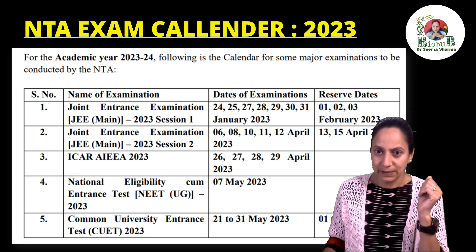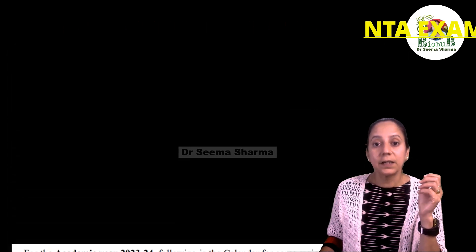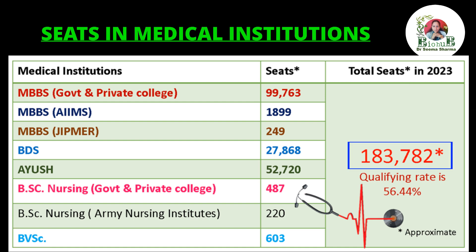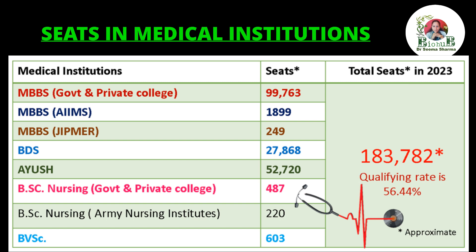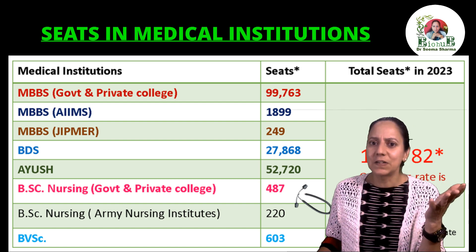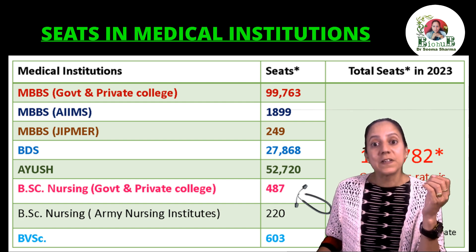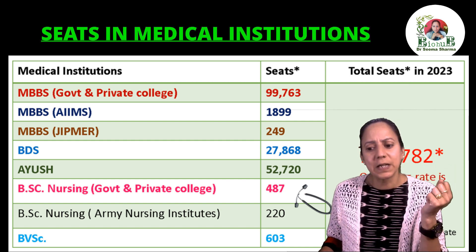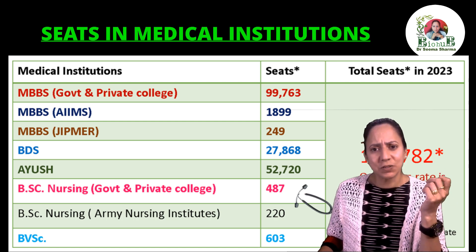Now let's see how many seats are there in medical institutions for which NTA conducts NEET. Here is a table depicting the total number of seats in different types of medical institutions, from government and private MBBS colleges to BSc Veterinary Science. The total number of seats for NEET aspirants is 183,782. Though it's a tough national-level test, the qualifying rate is quite high at 56.44%, and the number of seats is increasing year after year. This is approximate data for 2023.